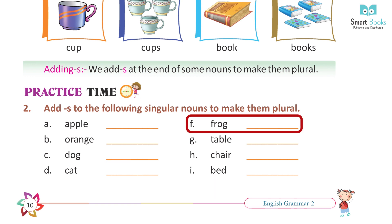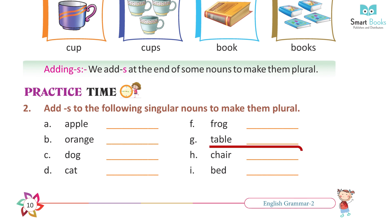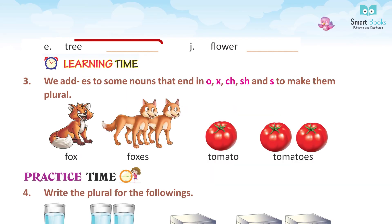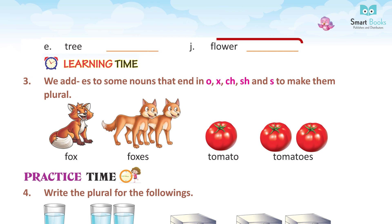G. Table — tables. H. Chair — chairs. I. Bed — beds. E. Tree — trees.